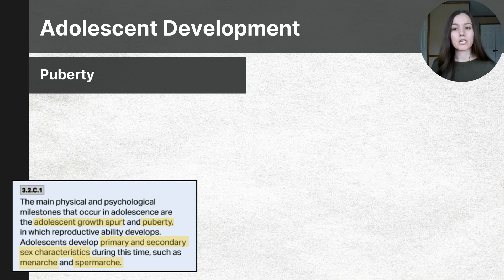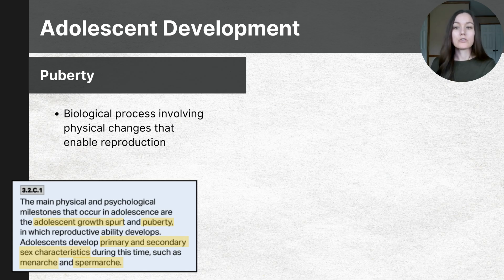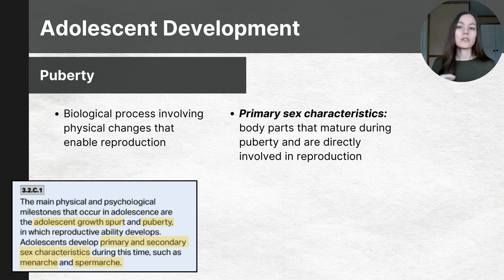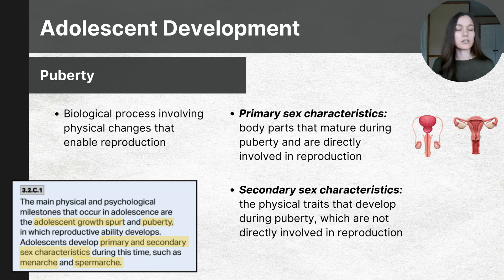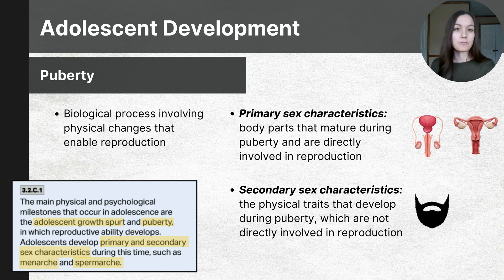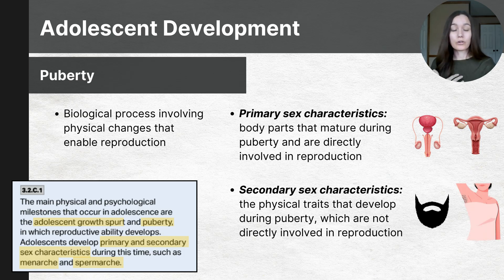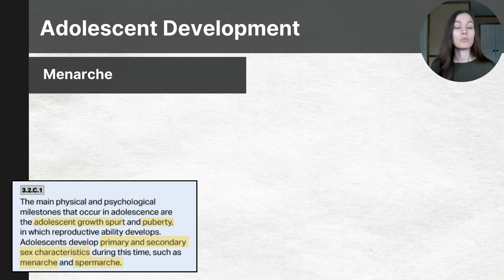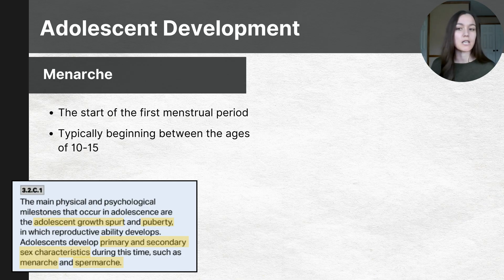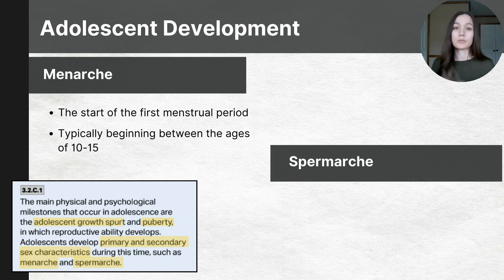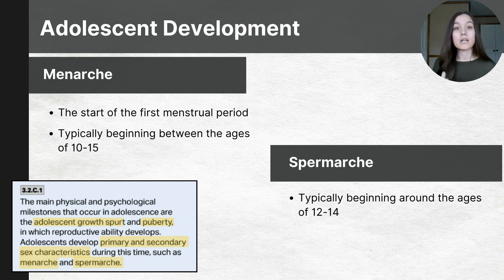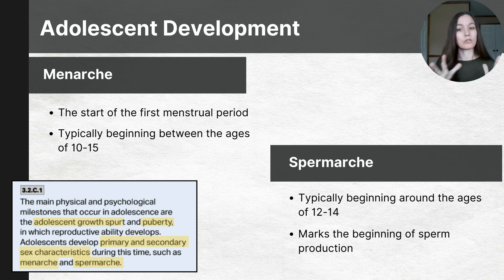A key feature of adolescence is puberty, which is the process that prepares the body for reproduction. During this time, the body's primary sex characteristics mature — these are the body parts directly involved in reproduction. Puberty also introduces secondary sex characteristics, which are physical changes not directly linked to reproduction. In boys, these include a deepening voice, facial and body hair growth, and increased muscle definition. For girls, secondary sex characteristics include breast development, widening of hips, and body hair growth. For girls, another major milestone in puberty is menarche, which is the start of the first menstrual period, typically occurring between the ages of 10 and 15. For boys, the parallel event is called spermarchy, which typically occurs between the ages of 12 and 14 and marks the beginning of sperm production. These changes mark the body's transition into sexual maturity and the ability to reproduce.